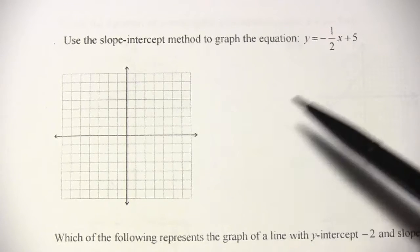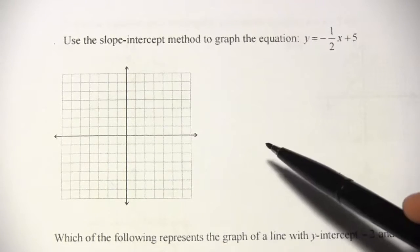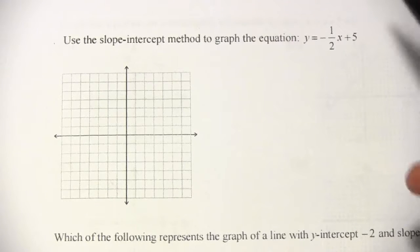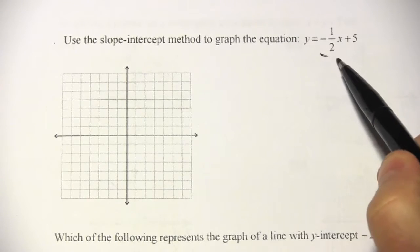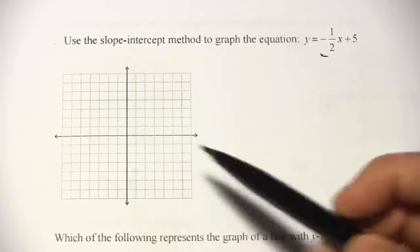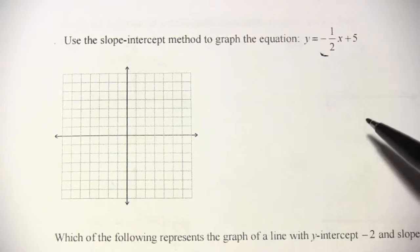In these problems, we're using the slope-intercept method to graph the equation of a line. So we're given an equation here, y equals negative one-half x plus 5, and we're going to graph that. How do we go about doing that?